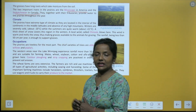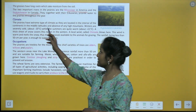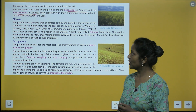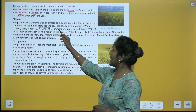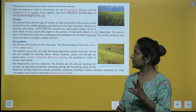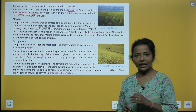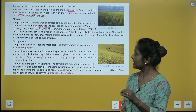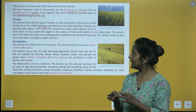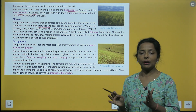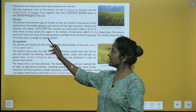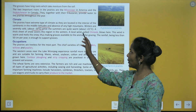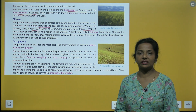Climate: the prairies have extreme type of climate as they are located in the interior of the continents, in the middle latitudes and absence of any high mountains. Prairies mein jo climate hota hai woh extreme hota hai. Winters are severely cold, about minus 20 degree centigrade, while the summers are quite warm, about plus 21 degree centigrade.